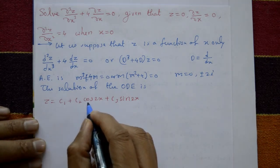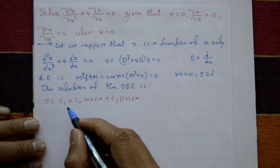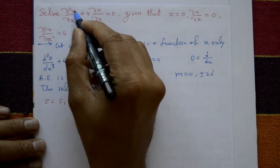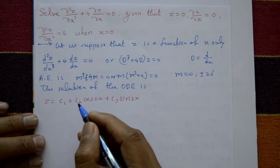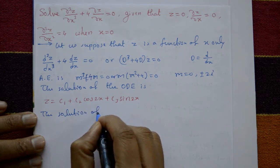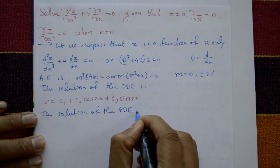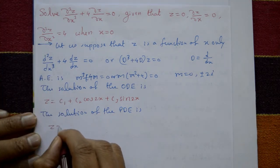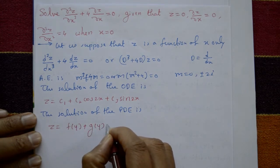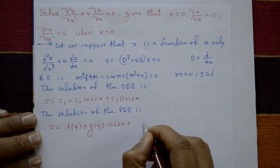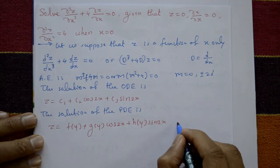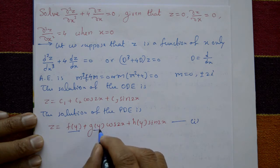Now convert back to the PDE. Replace constants c₁, c₂, c₃ with arbitrary functions of y: f(y), g(y), h(y). The solution of the partial differential equation is z = f(y) + g(y)cos(2x) + h(y)sin(2x). Call this equation number 1. Now find the values of f(y), g(y), h(y) using the given conditions.